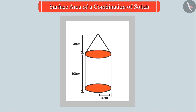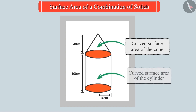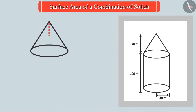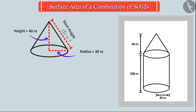So, in order to find the area of the wallpaper to be applied, he has to find the curved surface area of the cone and the cylinder. But to find the curved surface area of the cone, it is also necessary to know its slant height.